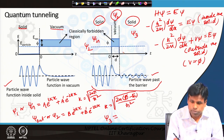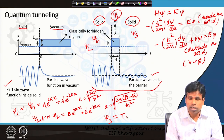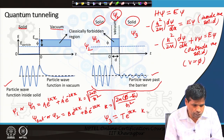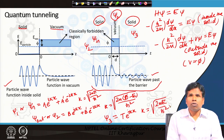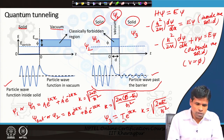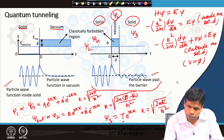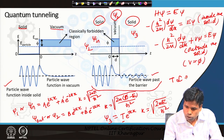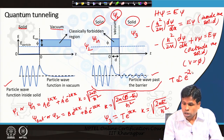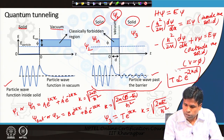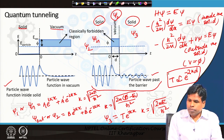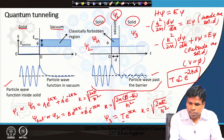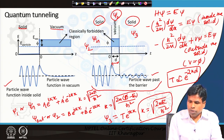The transmission coefficient T is proportional to e^(-2kd), where d is the thickness of the barrier and k = √(2mE/ℏ²). Once an electron crosses this gap — on one side is the sample and on the other side is the tip — electrons can tunnel from tip to sample or from sample to tip if we apply a potential. The transmission coefficient of the electrons, proportional to e^(-2kd), is equivalent to the tunneling current.